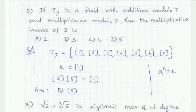If 3 has an inverse, then what number multiplied by 3 gives the identity element? 3 multiplied by 5 equals 15, and 15 mod 7 gives remainder 1. So the inverse of 3 is 5.